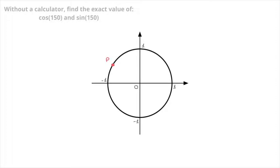I'll also add the radius OP, like so, and so we are saying that this angle corresponds to 150 degrees. By definition, P has coordinates cosine of 150 and sine of 150, and so those are the two values that we're trying to find.